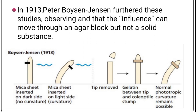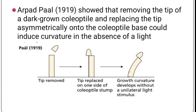However, when the tip was separated by an impermeable substance — a mica plate — then there was no curvature formed. Arpad Paal showed that removing the tip of a dark-grown coleoptile and replacing the tip asymmetrically onto the coleoptile base could induce curvature in the absence of a light stimulus.